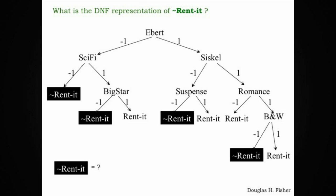You can do the same thing for not rented. Take a look at this decision tree, the same as the earlier one, but I've highlighted the not rented conditions. Come up with a disjunctive normal form DNF representation for not rented. And when you think you've got it, restart the video for the answer.